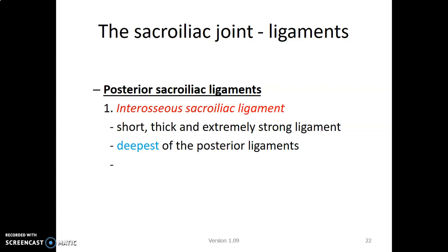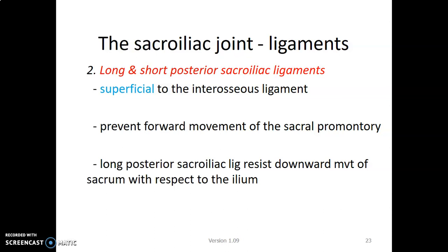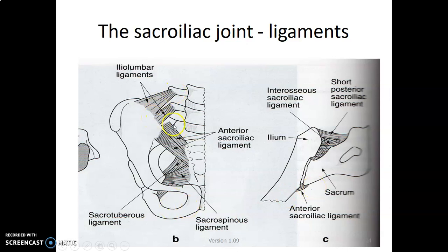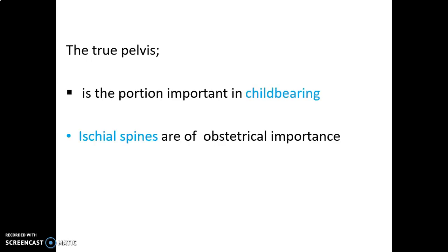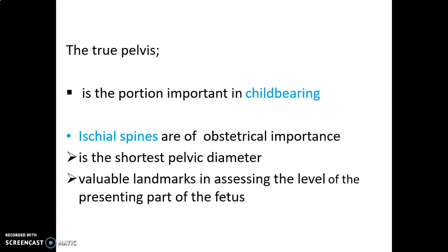The anterior sacroiliac ligament is weak, broad, and flat, lying on the pelvic side of the joint, and is slightly stronger in females. The posterior sacroiliac ligaments include the interosseous sacroiliac, which is short and thick (deeper), and the long and short posterior sacroiliac types. Accessory ligaments — the sacrotuberous and sacrospinous — stabilize the sacrum on the innominate and prevent forward tilting of the promontory. These two ligaments convert the greater and lesser sciatic notches into the greater and lesser sciatic foramina, allowing neurovascular structures to pass from the pelvis. The ischial spines are of important obstetrical significance; the interspinous diameter between the two ischial spines is the shortest part of the pelvic diameter.